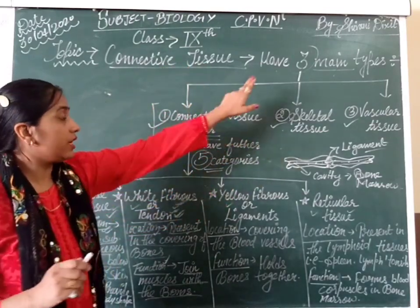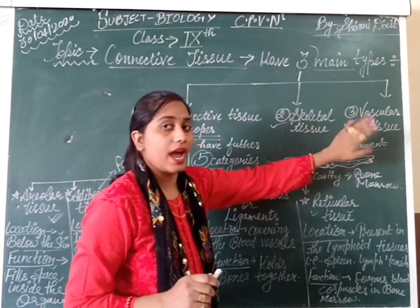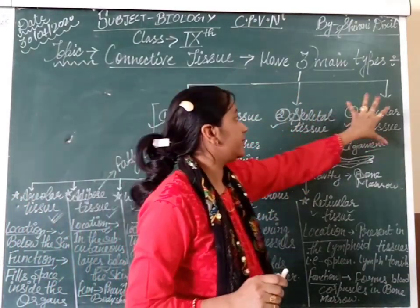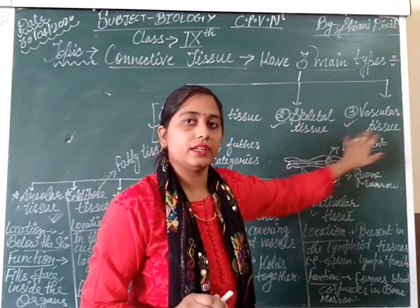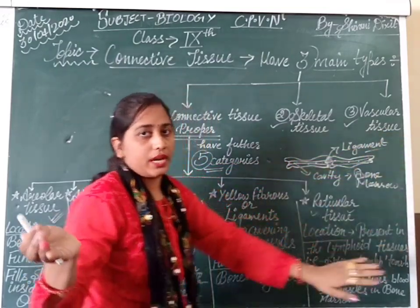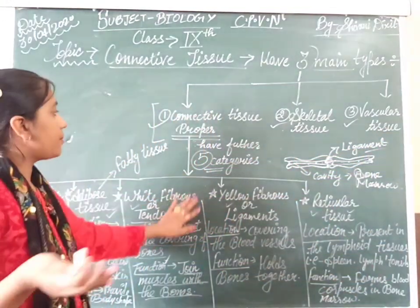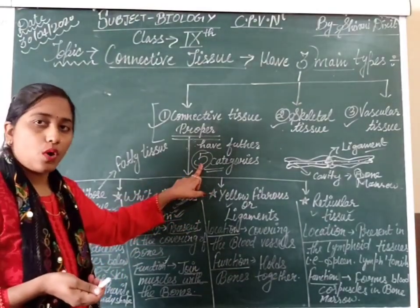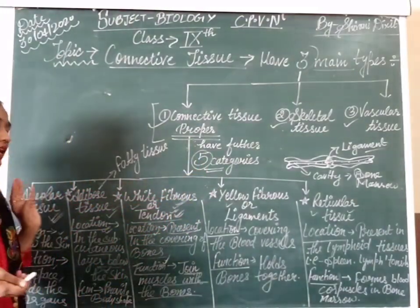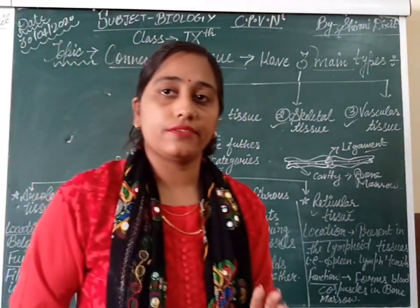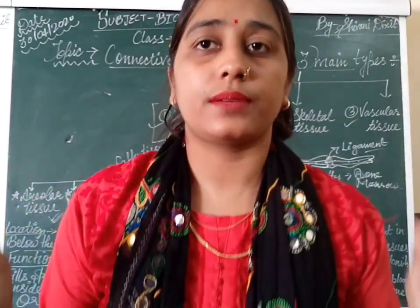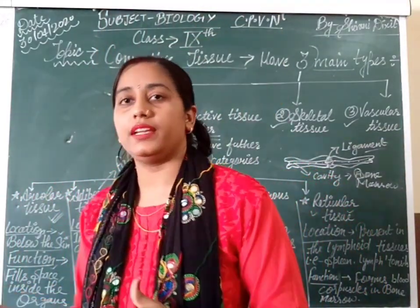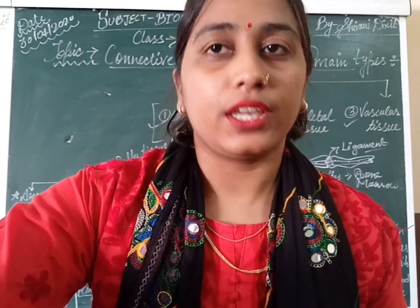So, I hope that covers connective tissue proper and its five categories: areolar, adipose, white fibrous, yellow fibrous, and reticular tissue. The other three main types — skeletal and vascular connective tissues — are separate topics and will be discussed in separate videos. If you liked the video, please like, subscribe, and share with your friends. Thank you, students, and have a nice day.